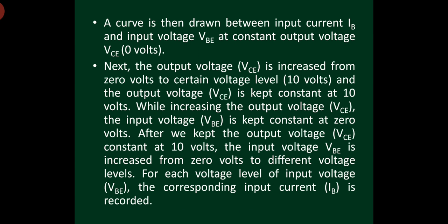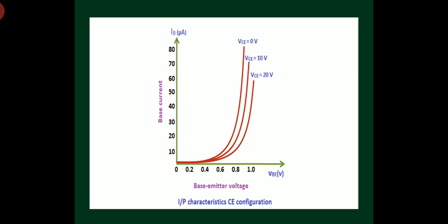The curve is drawn between input current IB and input voltage VBE for a constant output voltage VCE. By taking different values of VCE and varying VBE while noting IB, this is the graph we get in common emitter configuration for input characteristics.